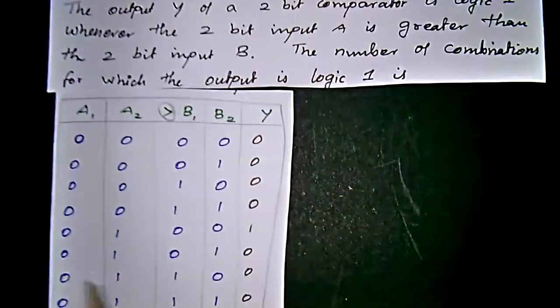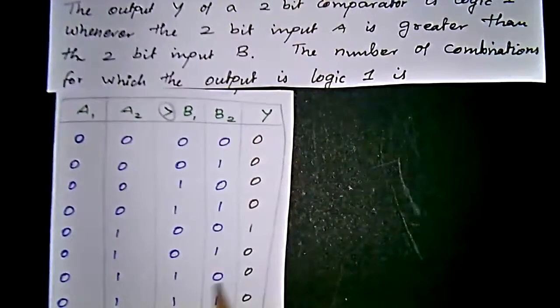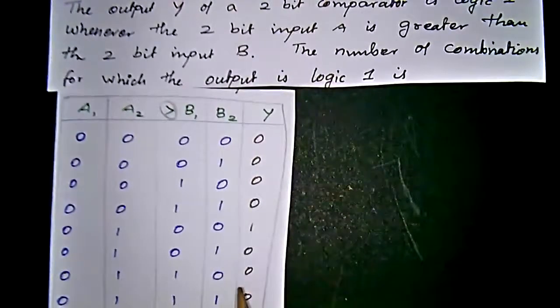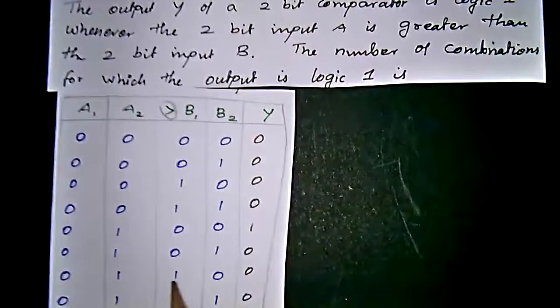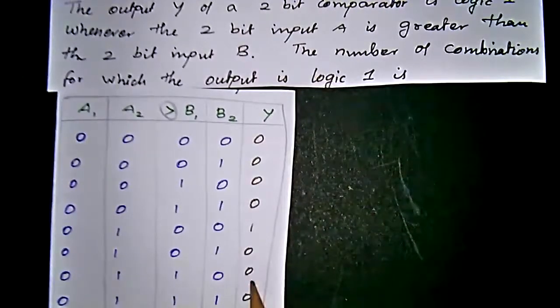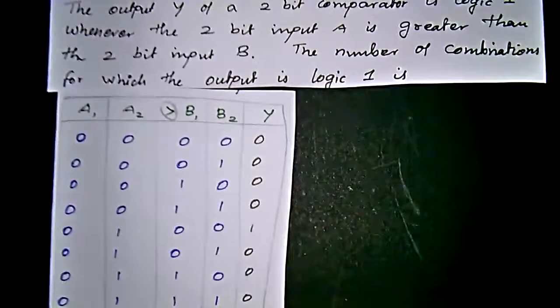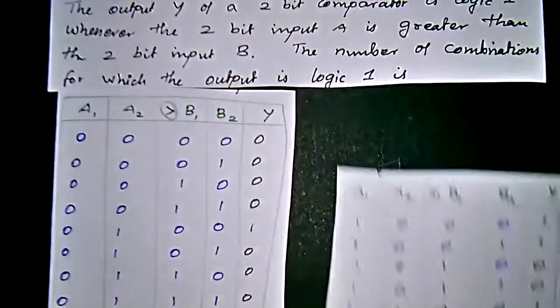Then 0, 1, 0, 1 which is equal, so we get 0. For 0, 1, 1, 0 the B value is greater than A, so output is 0. Again 0, 1, 1, 1 is also smaller, so we get 0.